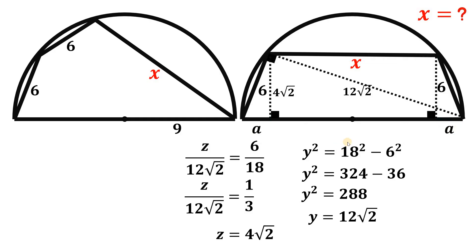So in short, this segment in the middle part must be equivalent to 18, the whole diameter, minus 2 times a. Which is: 18 minus 2a is the same thing as x. So if we get the value of a, we get also the value of x.